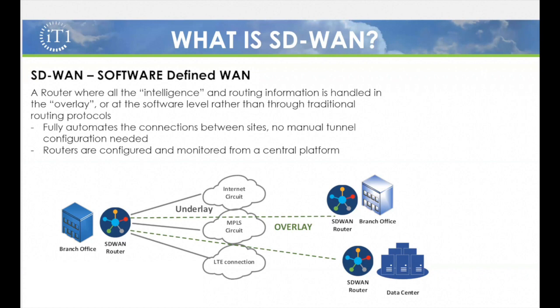Really what SD-WAN does is it fully automates all your connections between all your locations, so you're no longer manually configuring tunnels between your sites. It's all done from a central platform, typically a monitoring platform that orchestrates your entire network, all in one single pane of glass.